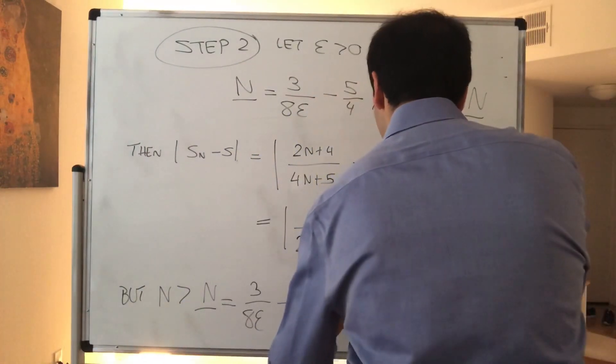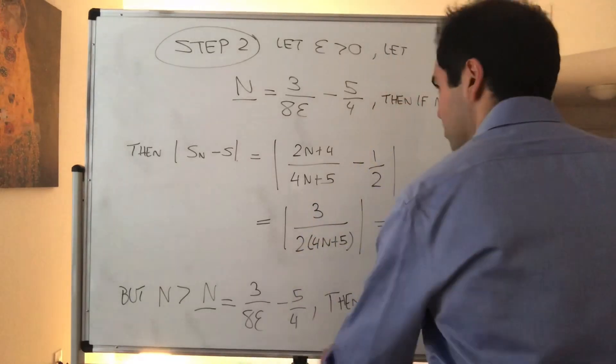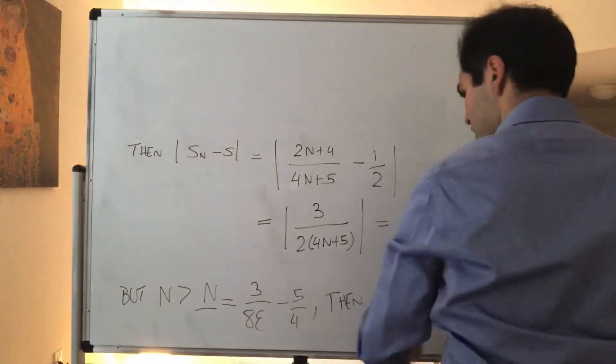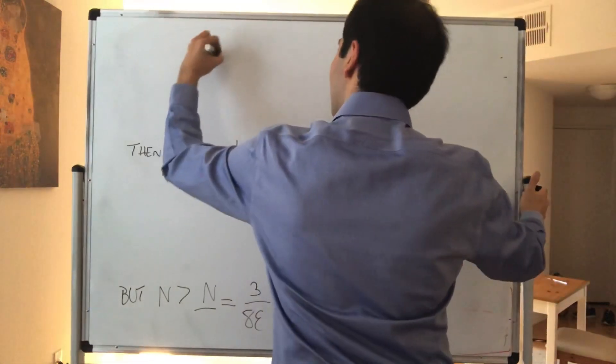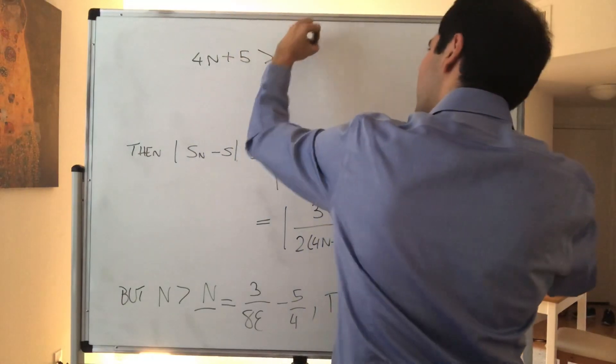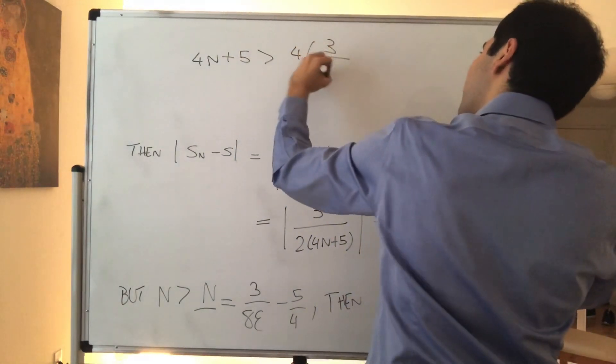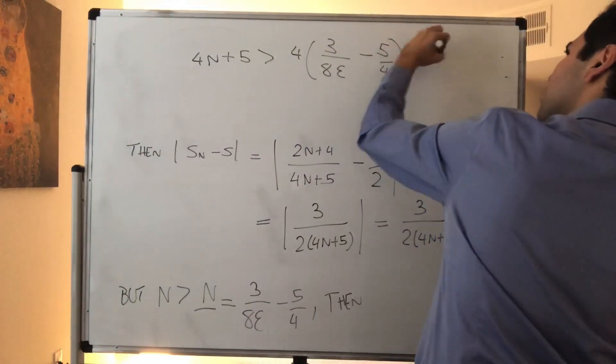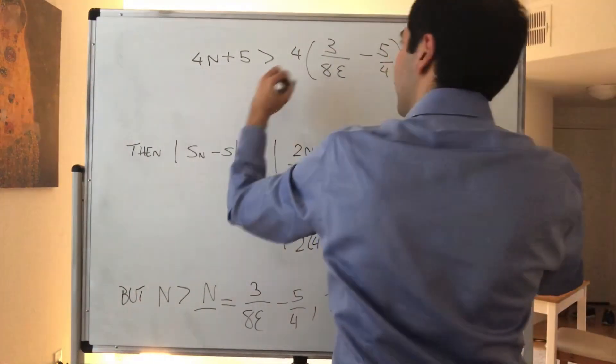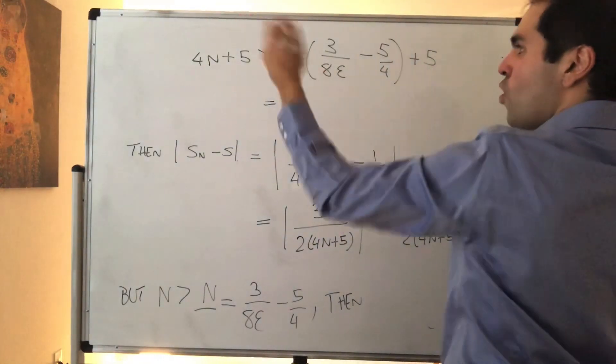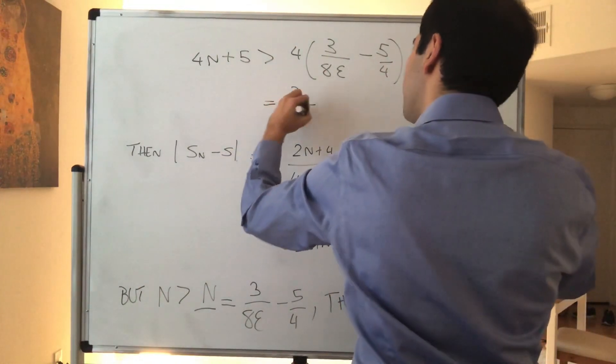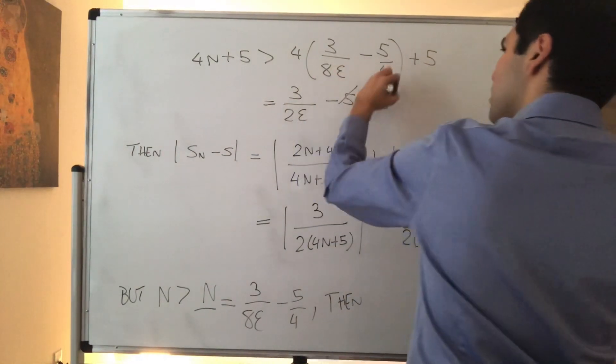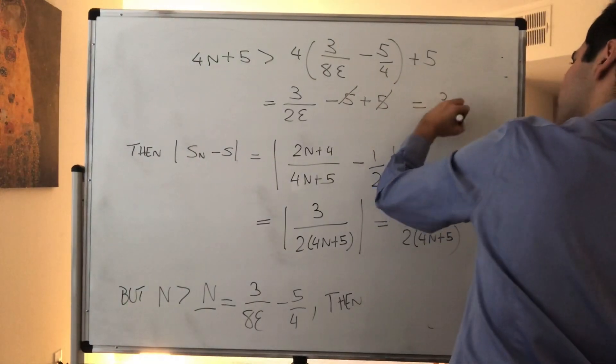Then, first of all, let's talk about this 4N plus 5. So then, 4N plus 5. It's greater than 4 times 3 over 8 epsilon minus 5 fourths plus 5. And that simplifies to, so 4 over 8 is 1 half, so 3 over 2 epsilon minus 5 plus 5. And that becomes 3 over 2 epsilon.